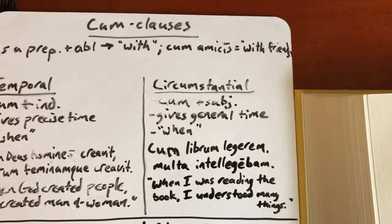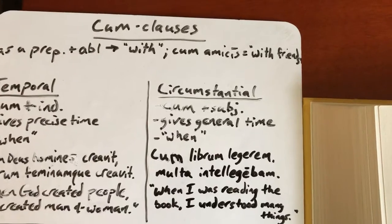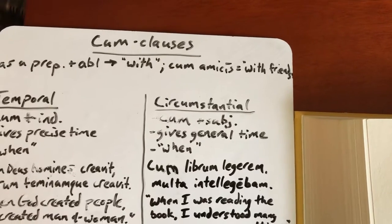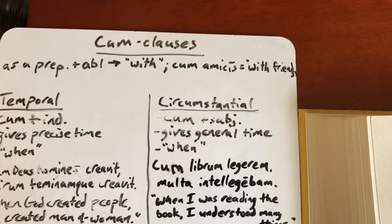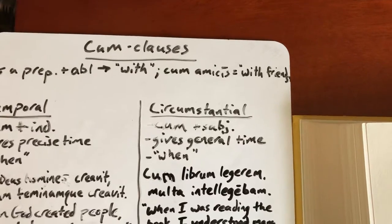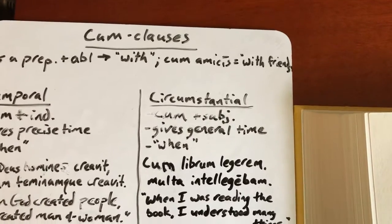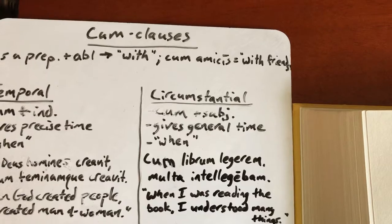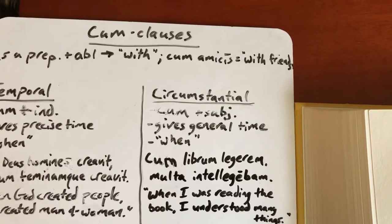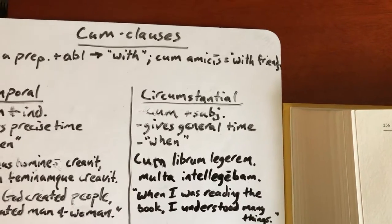Next is cum circumstantial. This one is very similar to temporal, but it takes a subjunctive verb. Rather than giving a precise time, it gives a general time — the general circumstances when something happened. It is also translated with the word 'when,' so no difference in translation. For example: 'When I was reading the book, I understood many things' — describing the general circumstances of understanding.